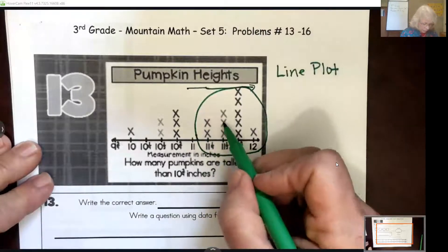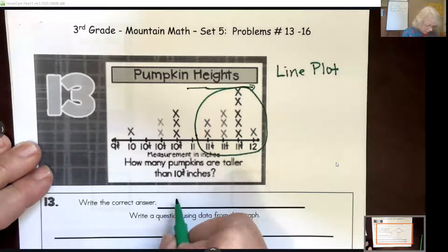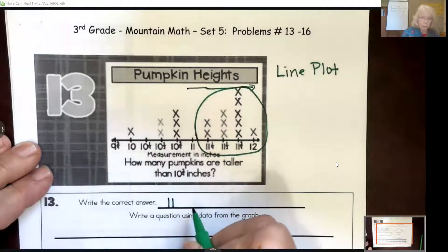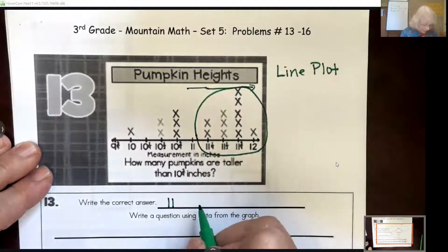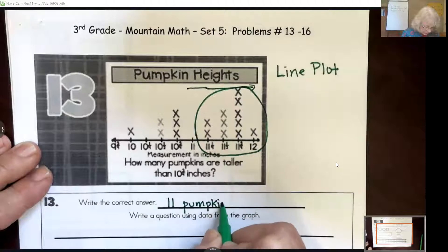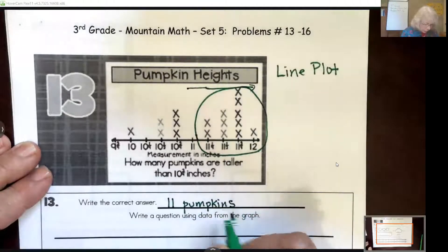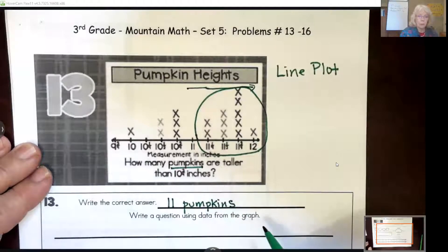So I'm going to put a circle around this area where all of these pumpkins would be taller than ten and three quarters inches. So now to answer the question we just count the number of X's. One, two, three, four, five, six, seven, eight, nine, ten, eleven. And the correct answer is eleven. Eleven what? Say it out loud. Pumpkins. Yes, eleven pumpkins.